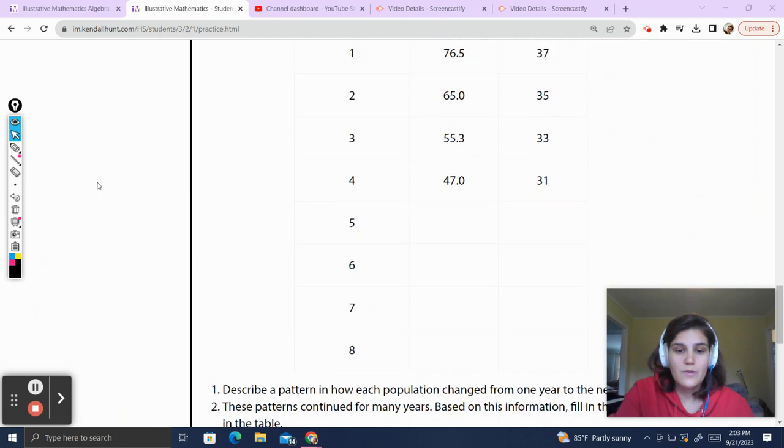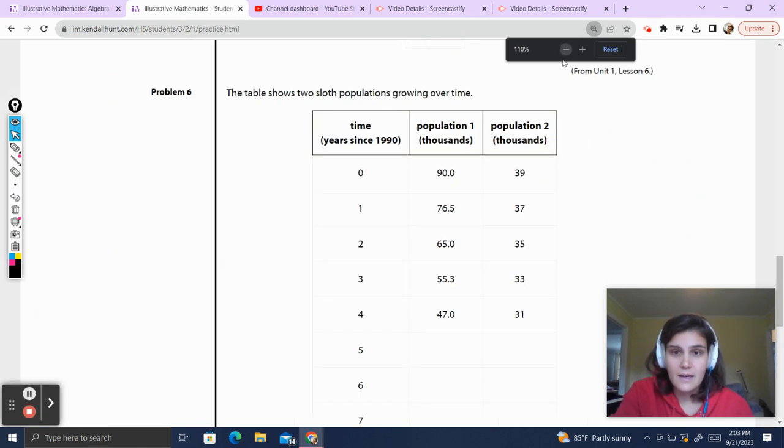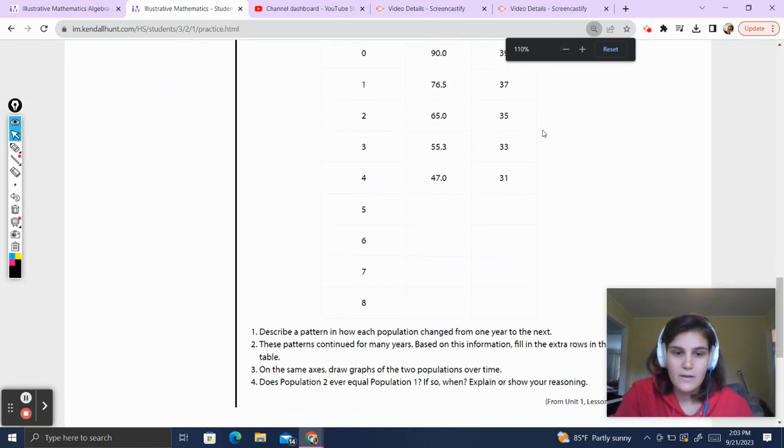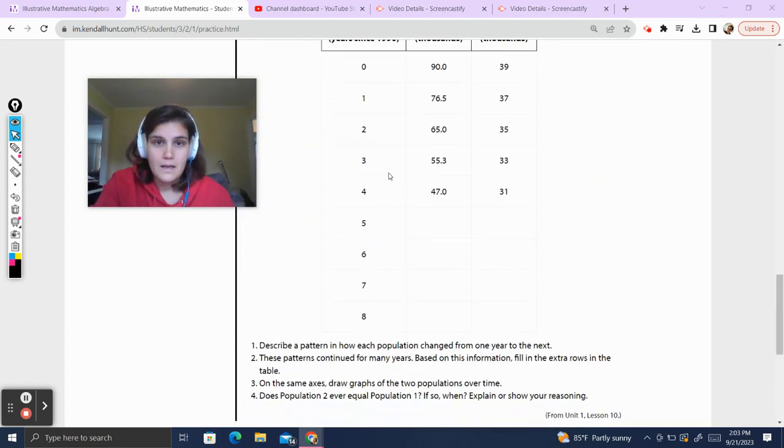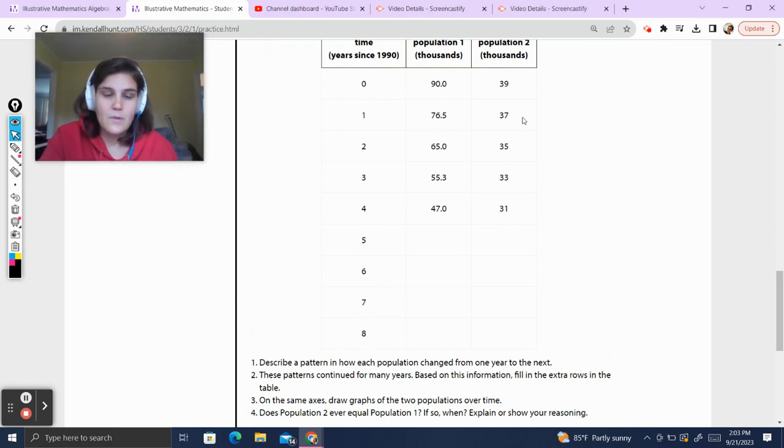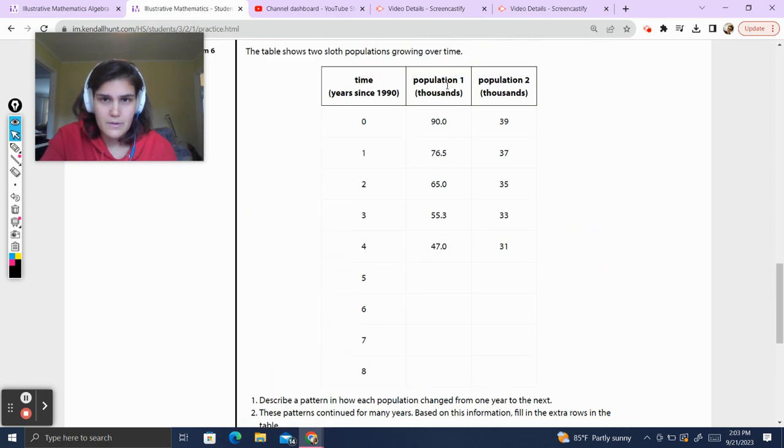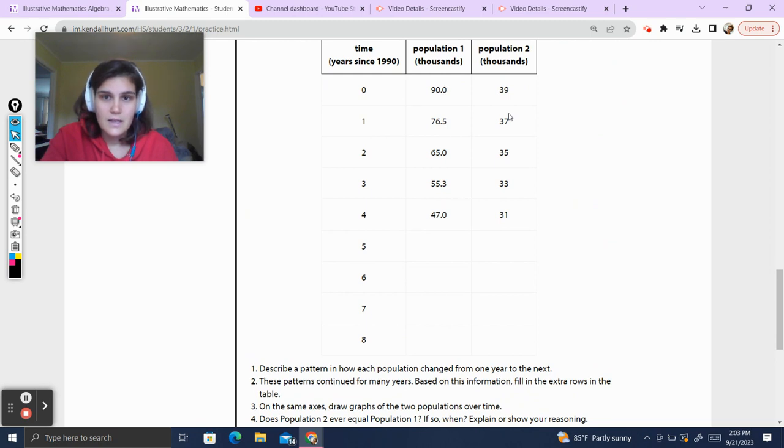The table shows two sloth populations growing over time. I like sloths. I learned today that sloths have ears that kind of look like human ears, but they're all covered by fur. So let's see if we can get this all to fit on one screen. So we have the time, which is represented by years since 1990. We have the population, which is represented in thousands, population 1 and population 2. So two different sloth populations.